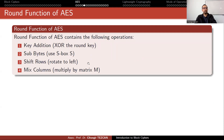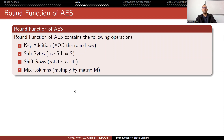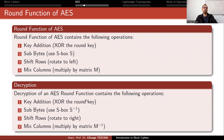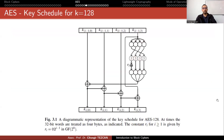A round function of AES consists of key addition, SubBytes, ShiftRows, and MixColumns. ShiftRows and MixColumns together provide diffusion: ShiftRows provides diffusion across the rows, and MixColumns provides diffusion across the columns. Decryption is simply the inverse of these operations.